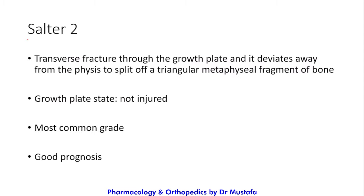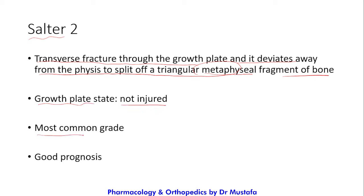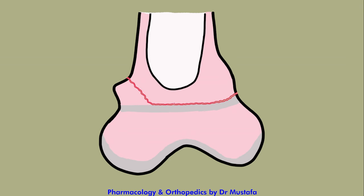Grade 2 is a transverse fracture through the growth plate that deviates away from the physis to split off a triangular metaphyseal fragment of bone — transverse through the physis, then deviating to the metaphysis. The growth plate is not injured. This is the most common grade and has a good prognosis.